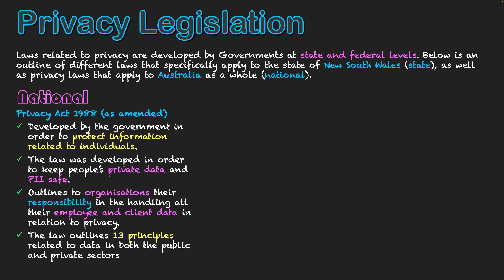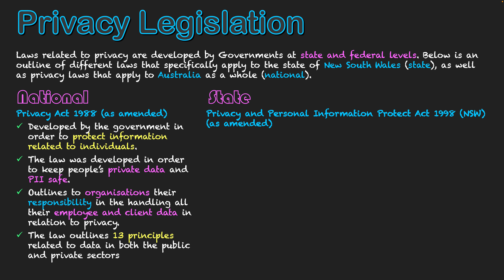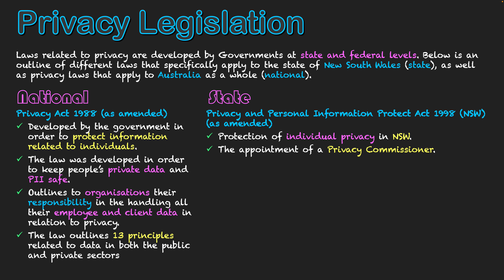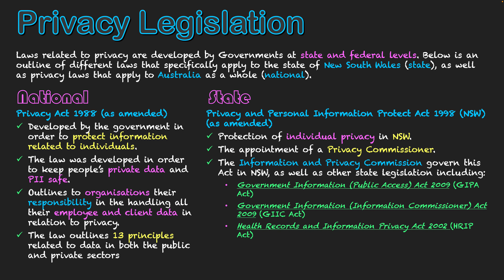At a state level here in New South Wales, we have the Privacy and Personal Information Protection Act 1998. With this specific law, it applies to individual privacy in New South Wales. A specific feature of this law is that it has the appointment of a privacy commissioner who oversees privacy, and this commissioner is appointed a team — the Information and Privacy Commission — that governs this act.